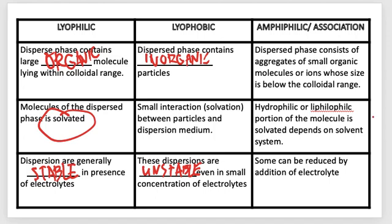For amphiphilic or association colloids, the dispersed phase consists of aggregates of small organic molecules or ions whose size is below the colloidal range. The hydrophilic or lipophilic portion of the molecule is solvated depending on the solvent system or the dispersing medium used. Stability can be reduced by addition of electrolytes.